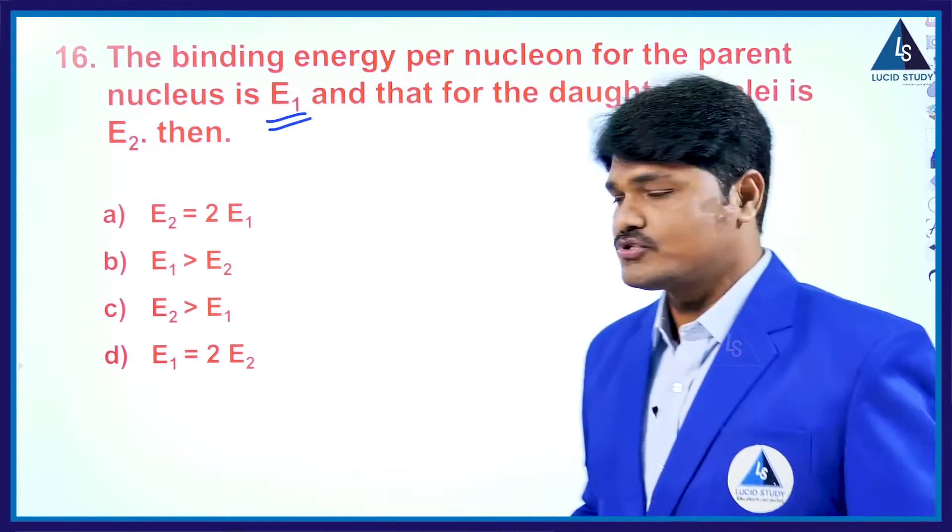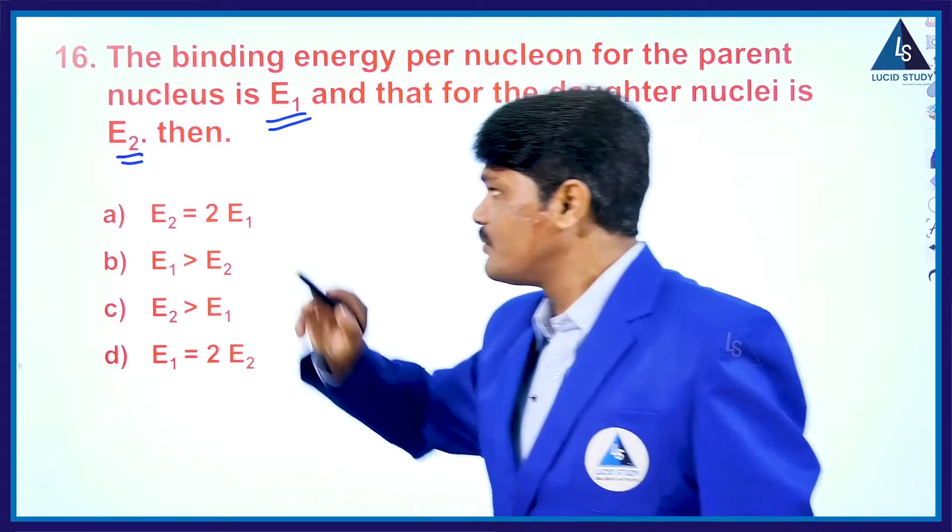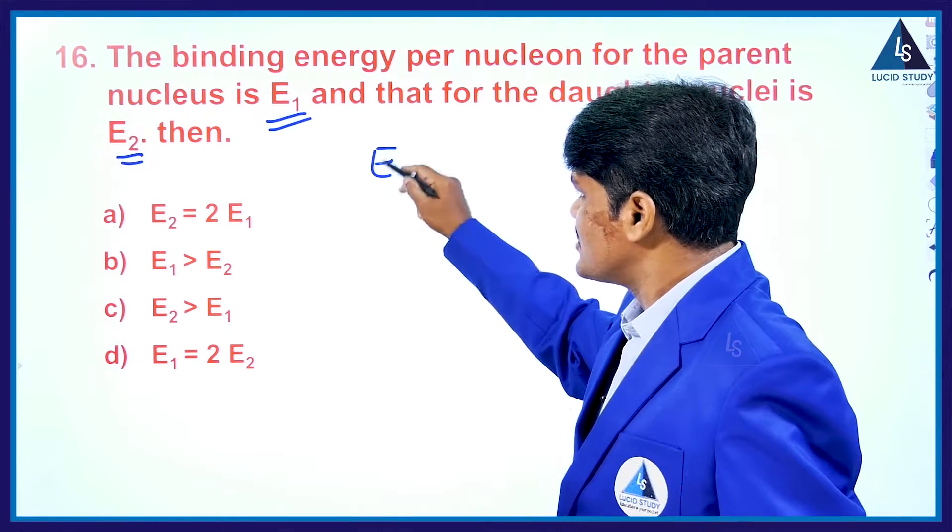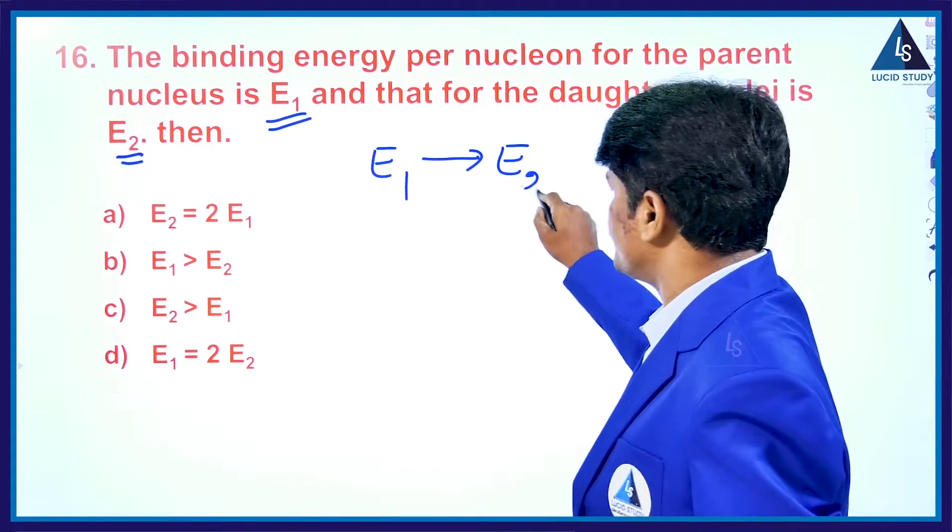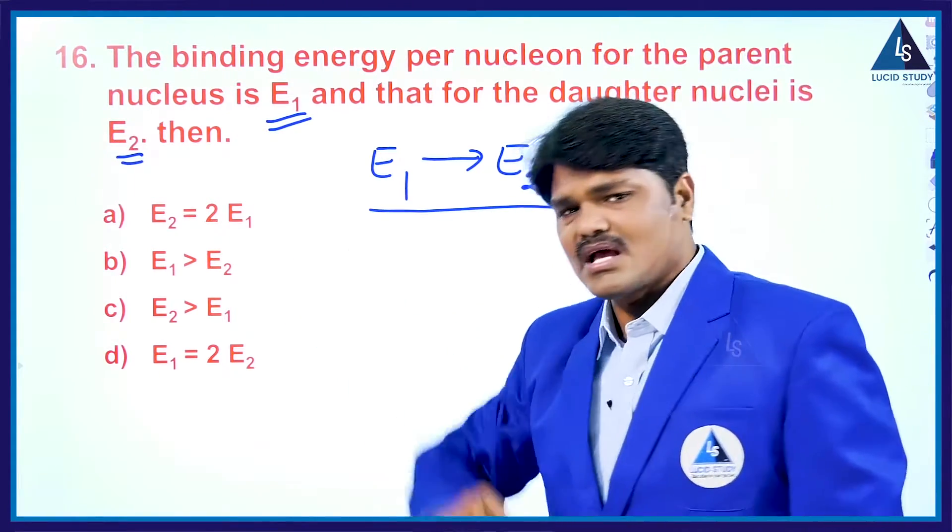So for the daughter nucleus, the binding energy will be E₂. Parent nucleus energy will be E₁ and daughter nucleus energy will be E₂. Amongst these, the relation is being asked.